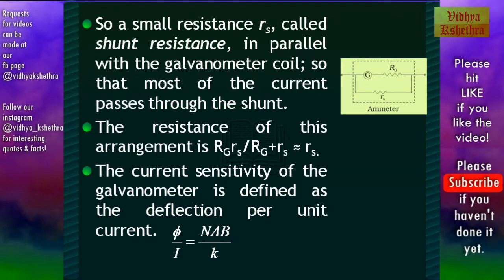Now the current sensitivity of the galvanometer is defined as the deflection per unit current. That is φ/i is equal to naB/k.